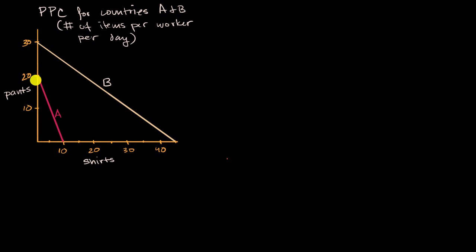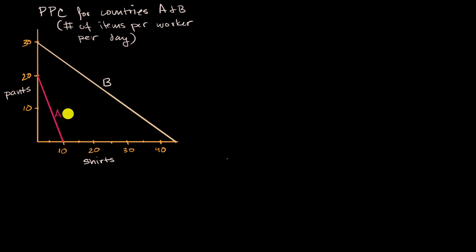For example, in country A, per worker per day, if they put all of their energy into pants, they could produce 20. If they put all of their energy into shirts, they could produce 10. Or there could be some combination that would sit on this line. To help us digest the production possibility curves for these two countries, let me construct an output table.